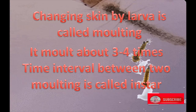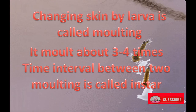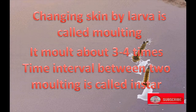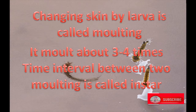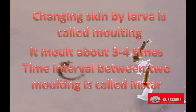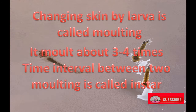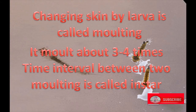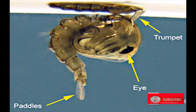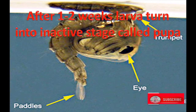The larva molts about three to four times. The time interval between two moltings is called an instar. After one to two weeks, the larva turns into an inactive stage called pupa.